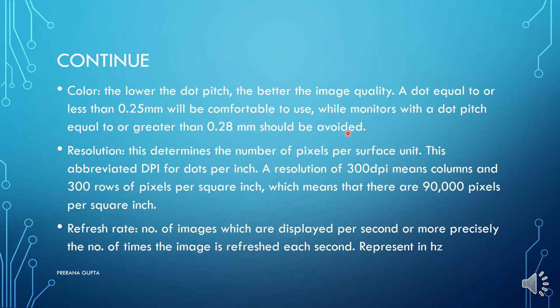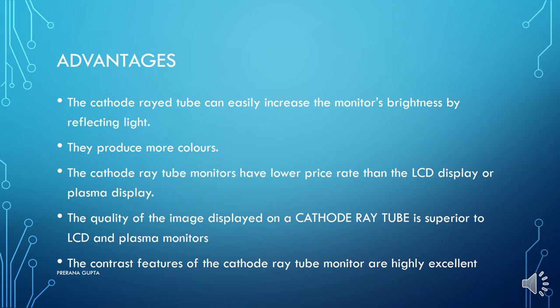A resolution of 300 DPI means 300 columns and 300 rows of pixels per square inch, which means there are 90,000 pixels per square inch. Refresh rate is the number of images displayed per second, or more precisely the number of times the image is refreshed each second.